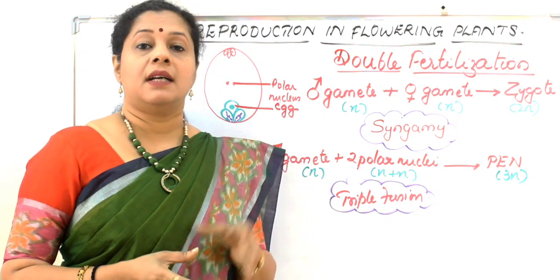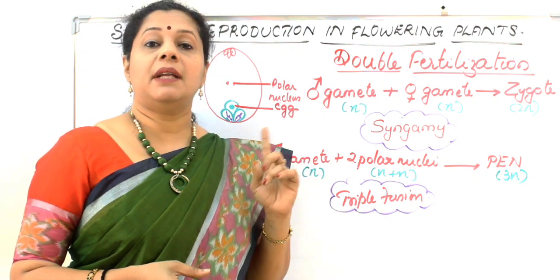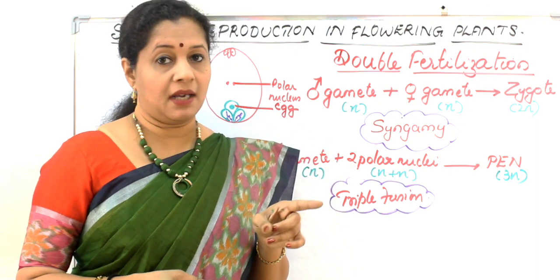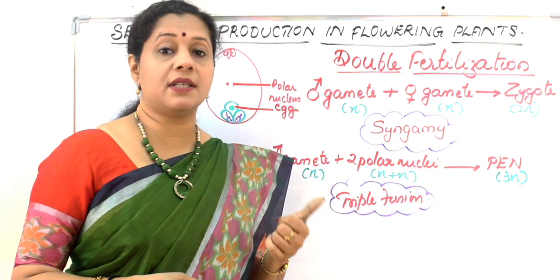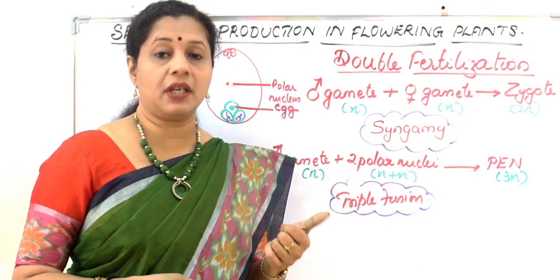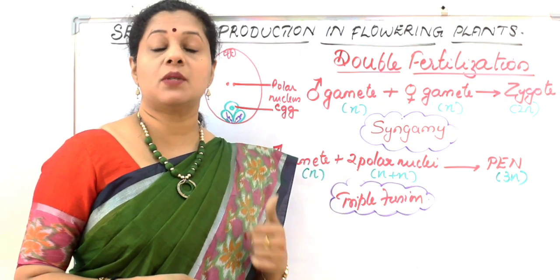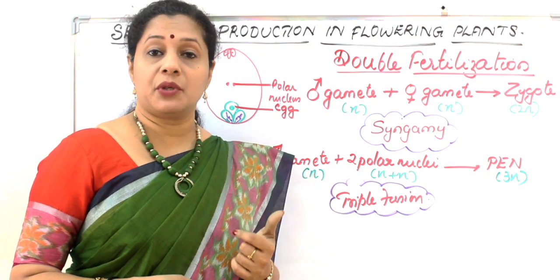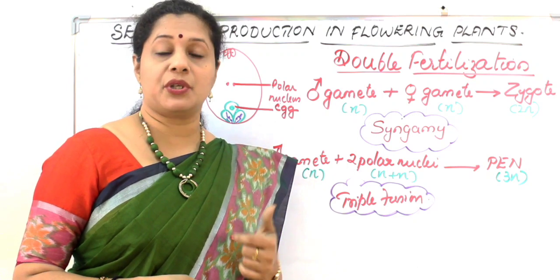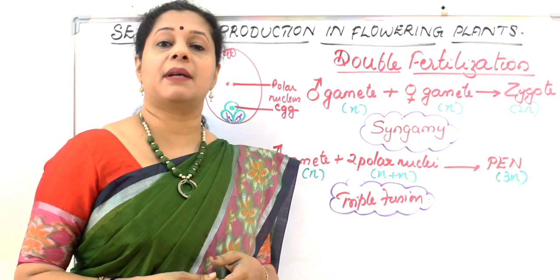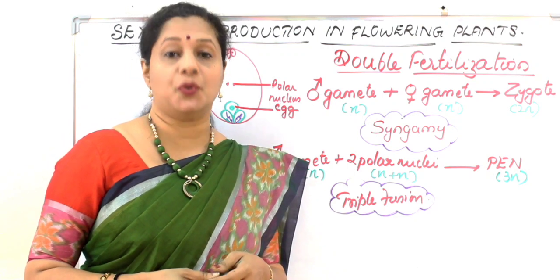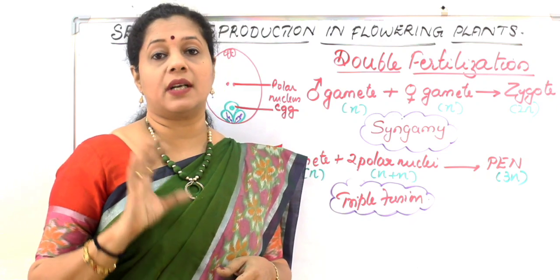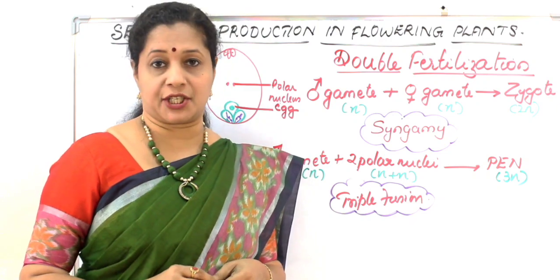To summarize: one male gamete fuses with the egg cell to form syngamy, and the zygote is the resultant structure. Whereas the other male gamete fuses with the polar nuclei by a fusion called triple fusion to produce the primary endosperm nucleus. Since two fusions are involved, it is called double fertilization.